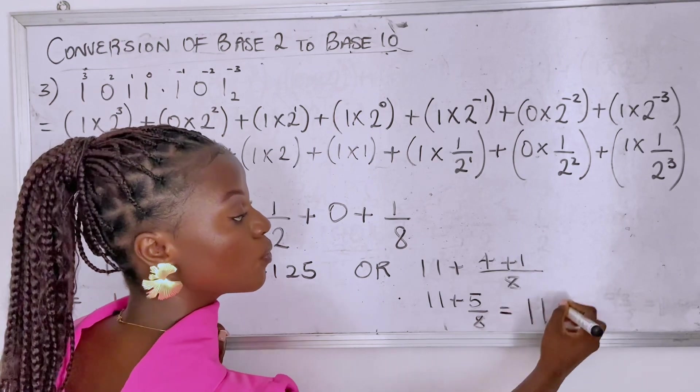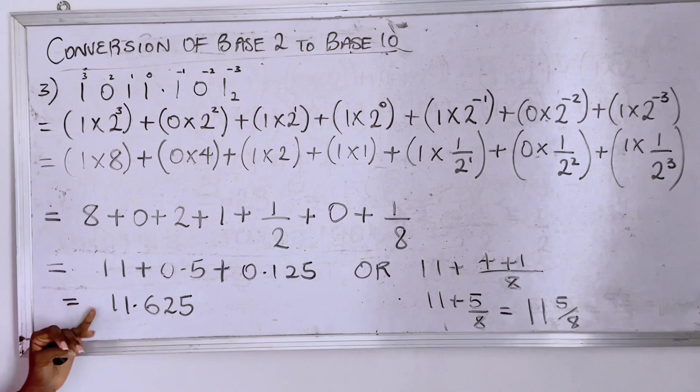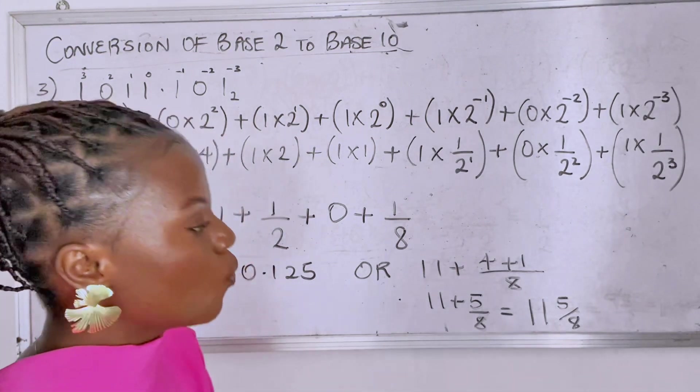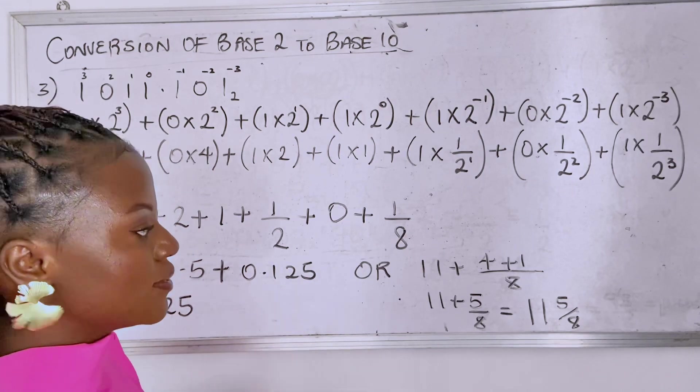You have eleven plus five over eight, which gives you eleven and five over eight. You could have this in decimal or in fraction, whichever one works best for you. You're going to get the same answer.